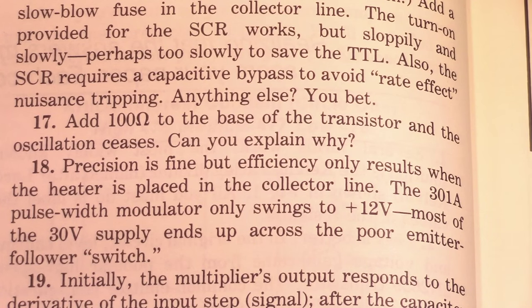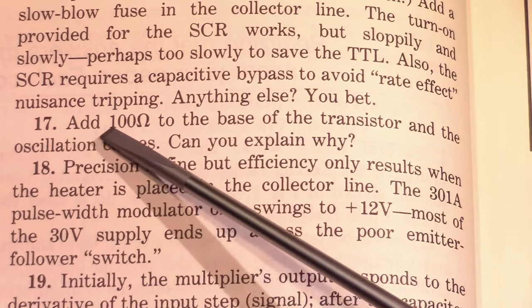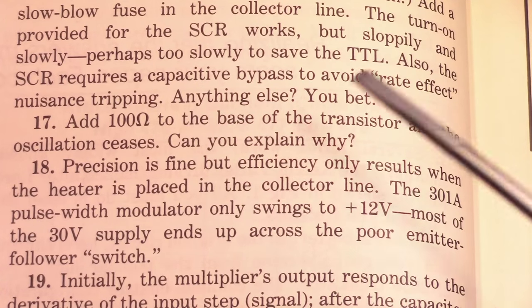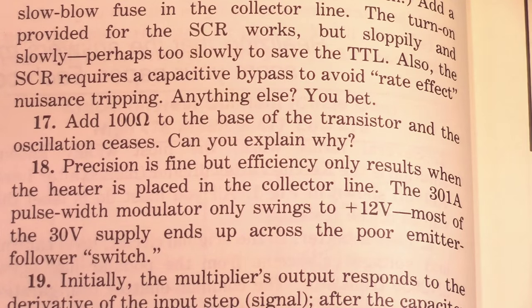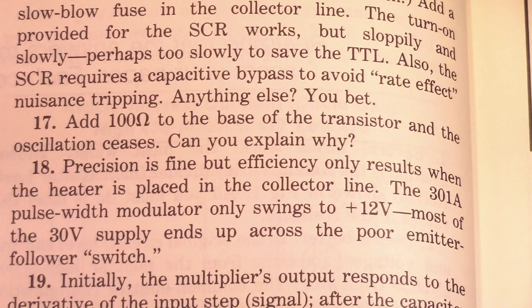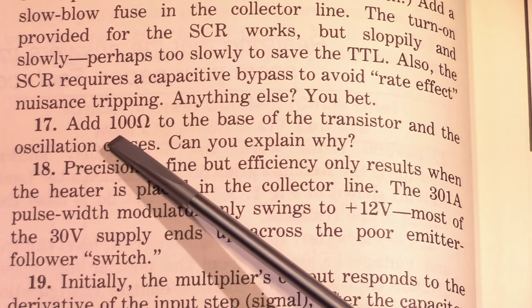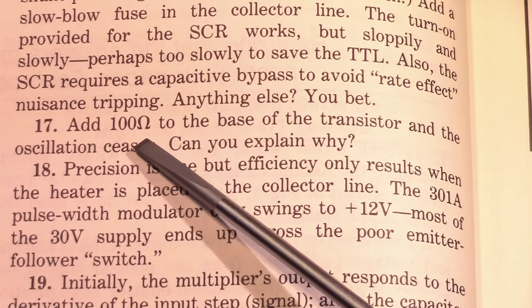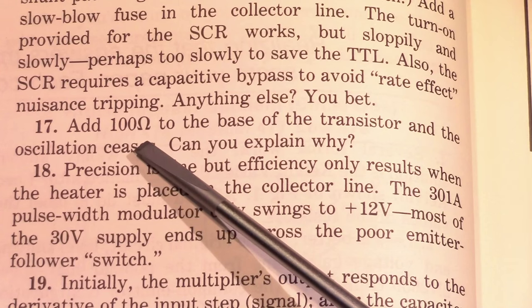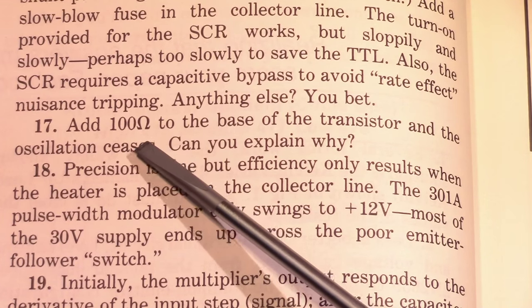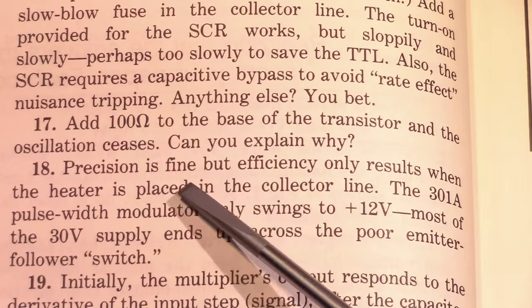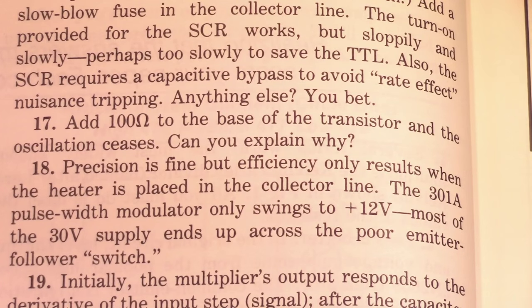So what does the book have to say about this? Add a 100 ohm resistor to the base of the transistor, and the oscillation ceases, and that's exactly what we were seeing on the bench. And can you explain why? Well yes, the stray capacitance and inductance in the circuit was turning the emitter follower into a Colpitts oscillator, and adding that additional resistance in the feedback path was attenuating that feedback enough so that it didn't meet the Barkhausen gain criteria for oscillation, and we never broke into oscillation.